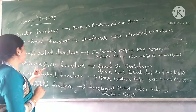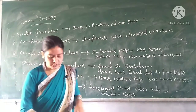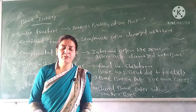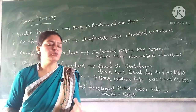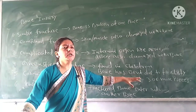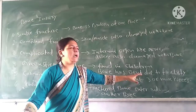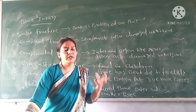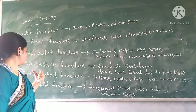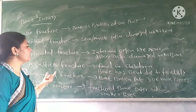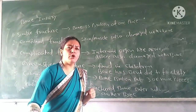The fourth type is a greenstick fracture. A greenstick fracture generally occurs in small children, whose bones are very flexible — so the bone does not break completely but bends. We call it a greenstick fracture. The fifth type is a comminuted fracture, where the bone is broken into three or more pieces.